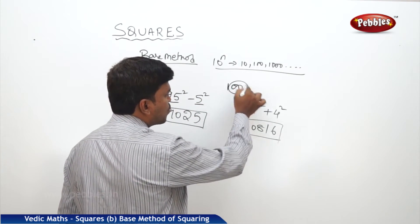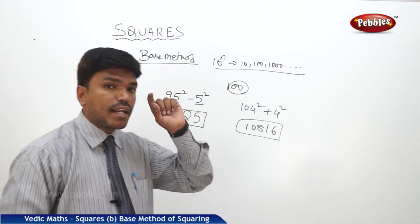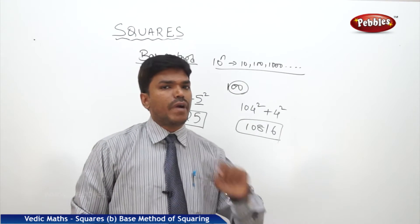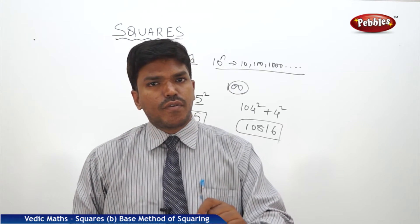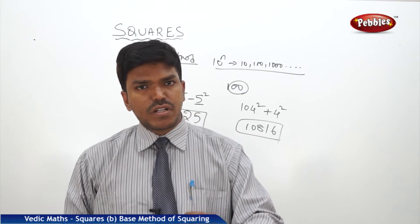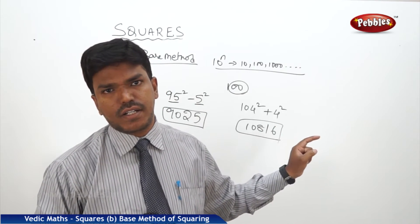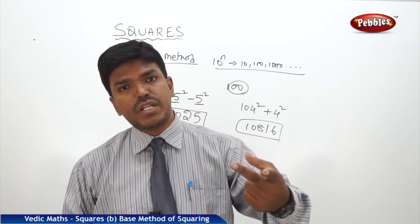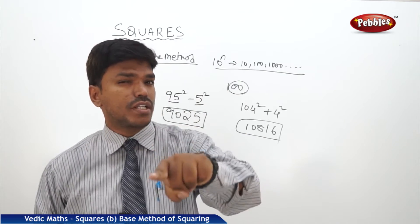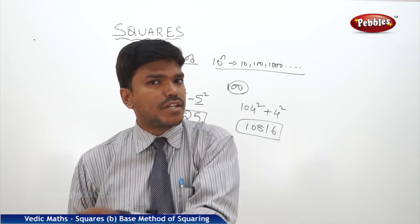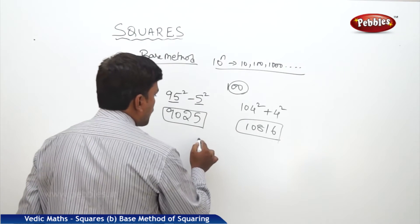We need to remember: the base we are taking is 100. There are 2 zeros in 100, which means the right side part of the answer should be only 2 digits. If you are taking base 1000, there are 3 zeros, so the right side part should consist of exactly 3 digits — not more, not less.